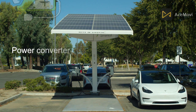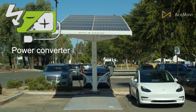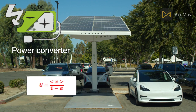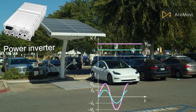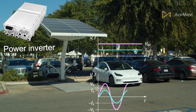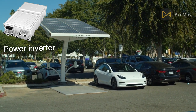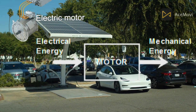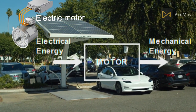The power converter takes the low DC voltage from the battery output and converts that value to a higher value. The power inverter converts direct current into alternating current for use by the electrical motor to drive the vehicle. The electrical motor converts electrical energy to mechanical energy to drive the vehicle.